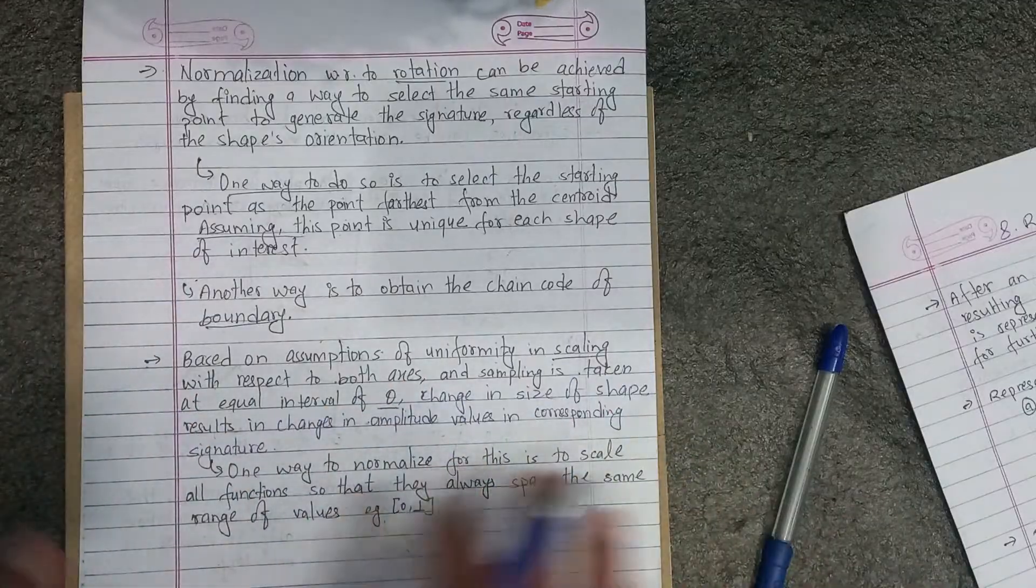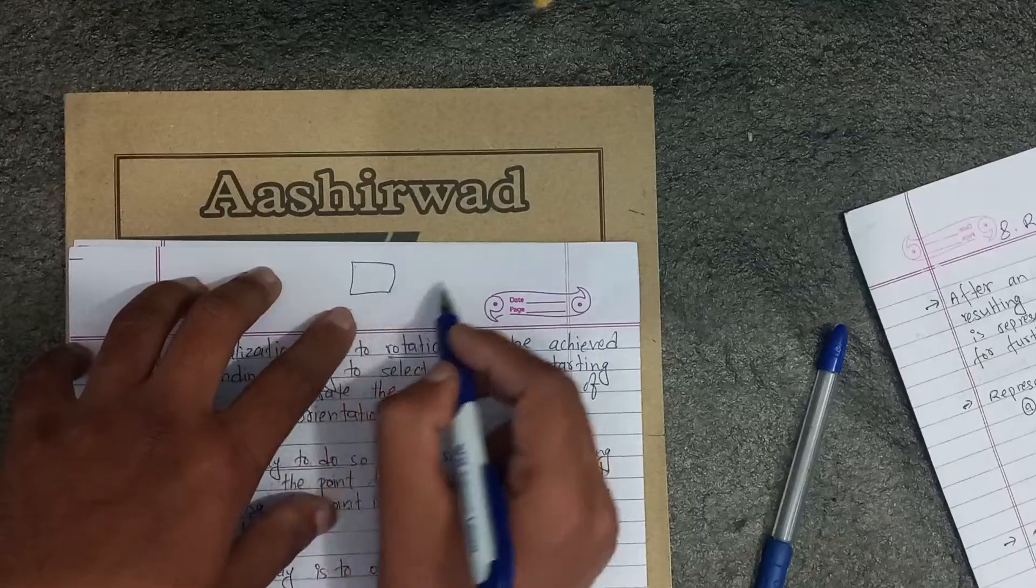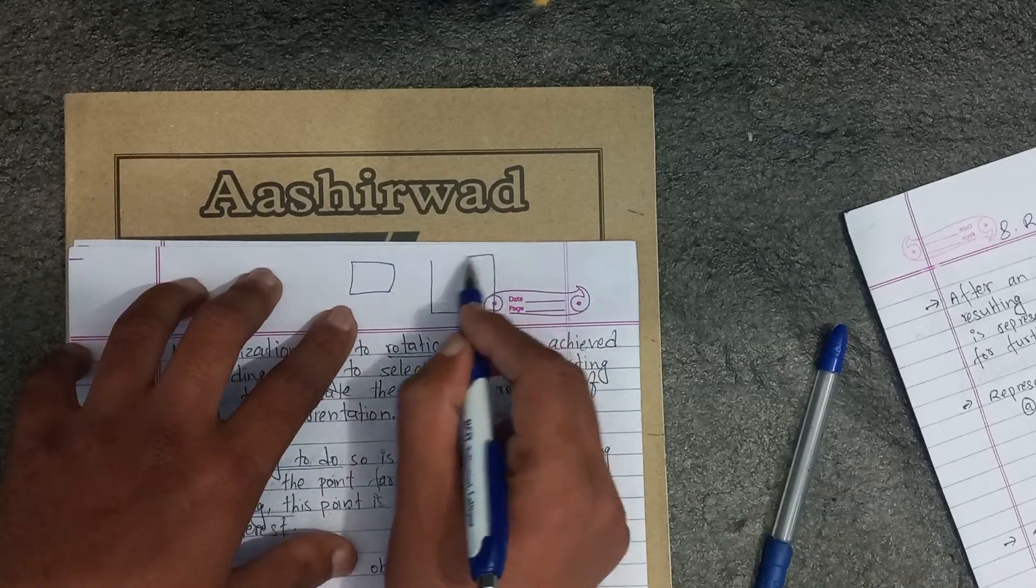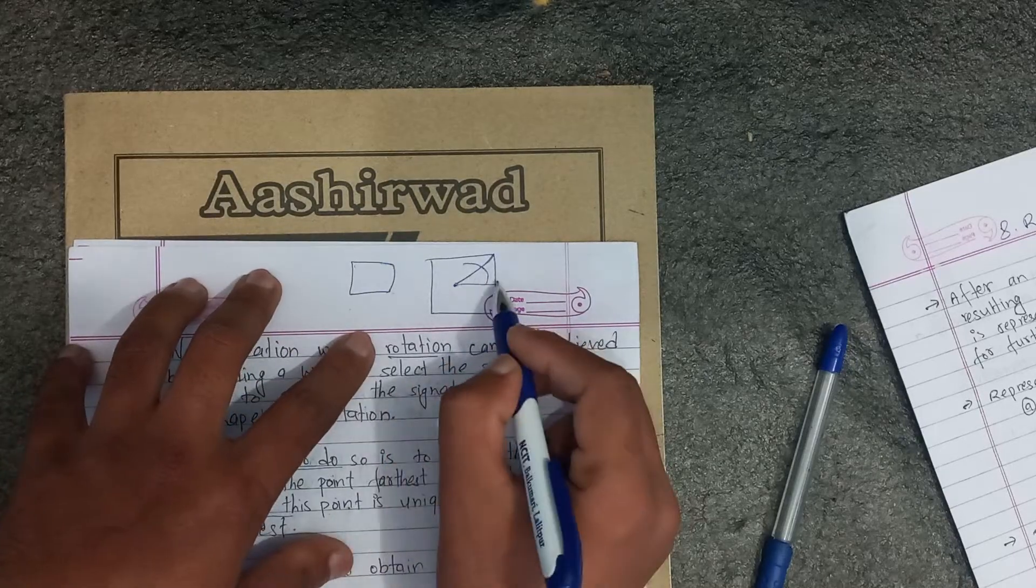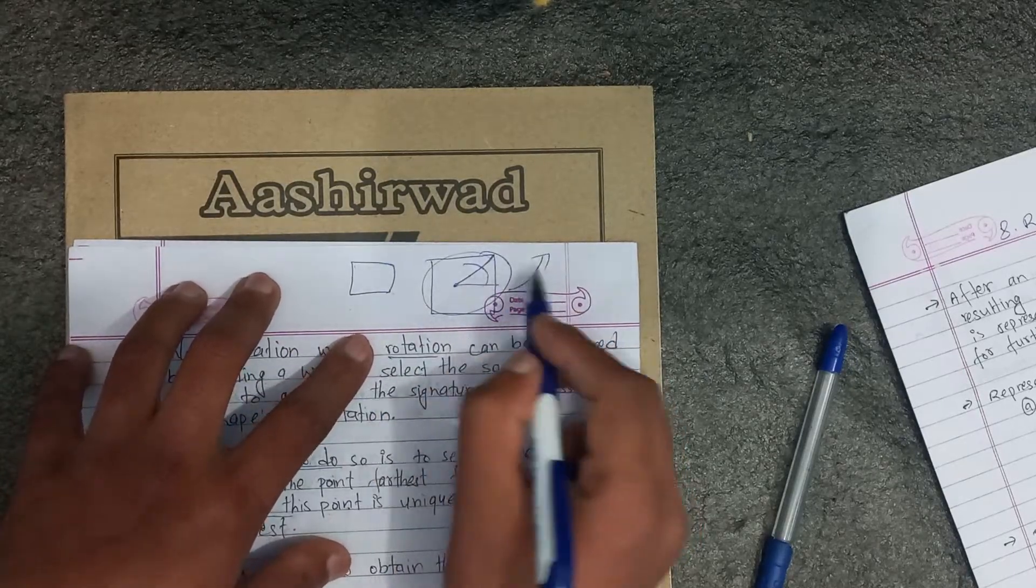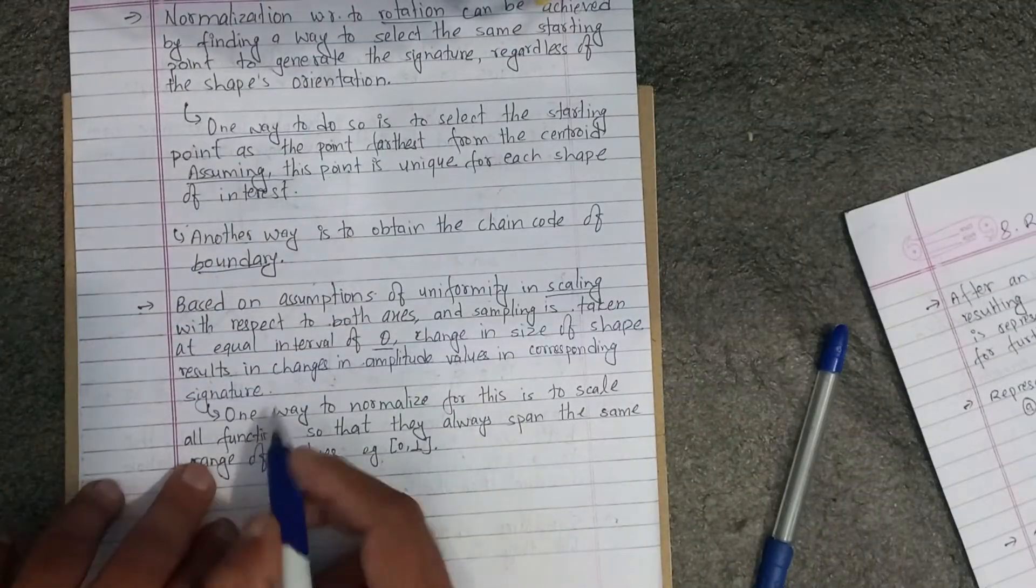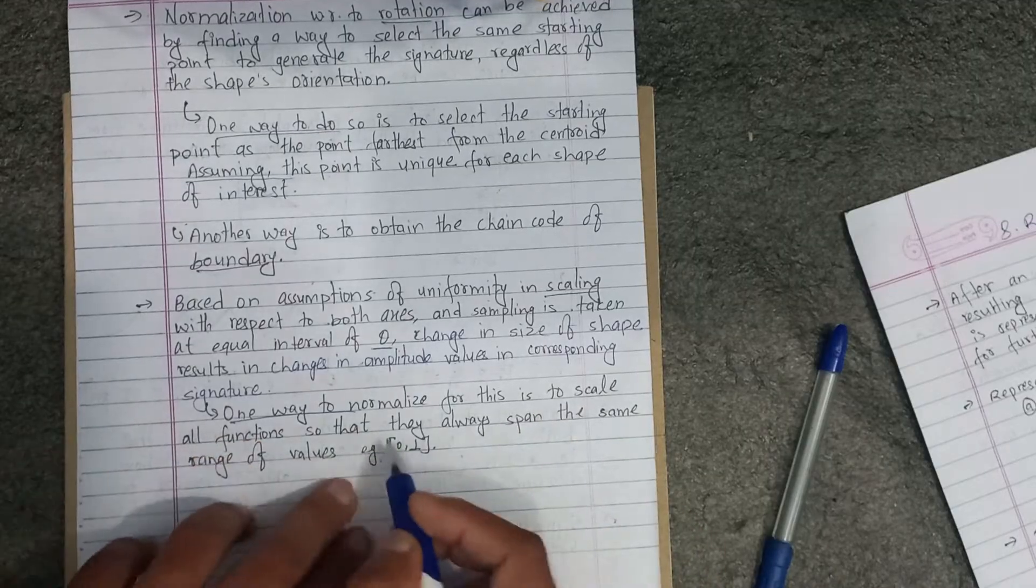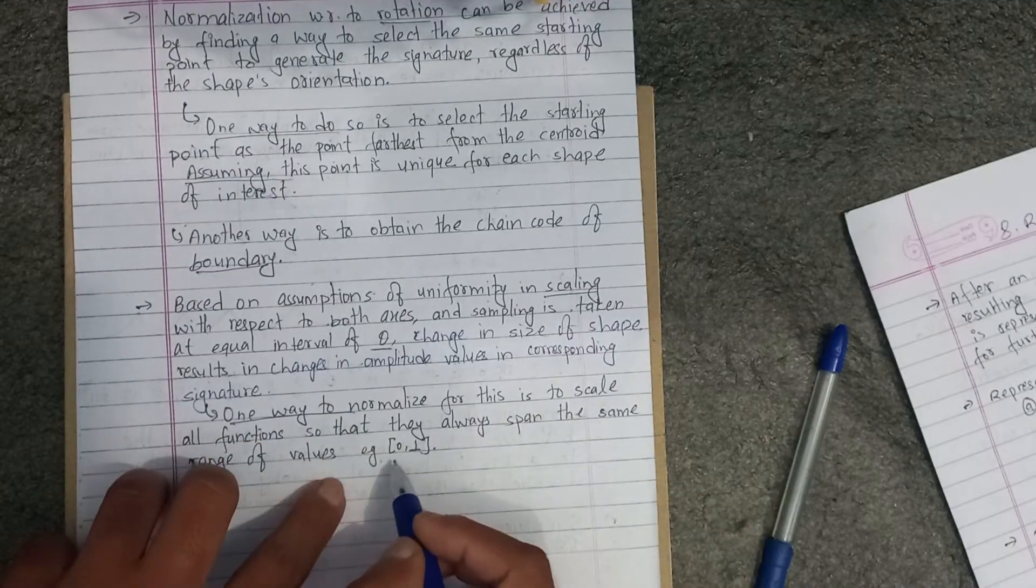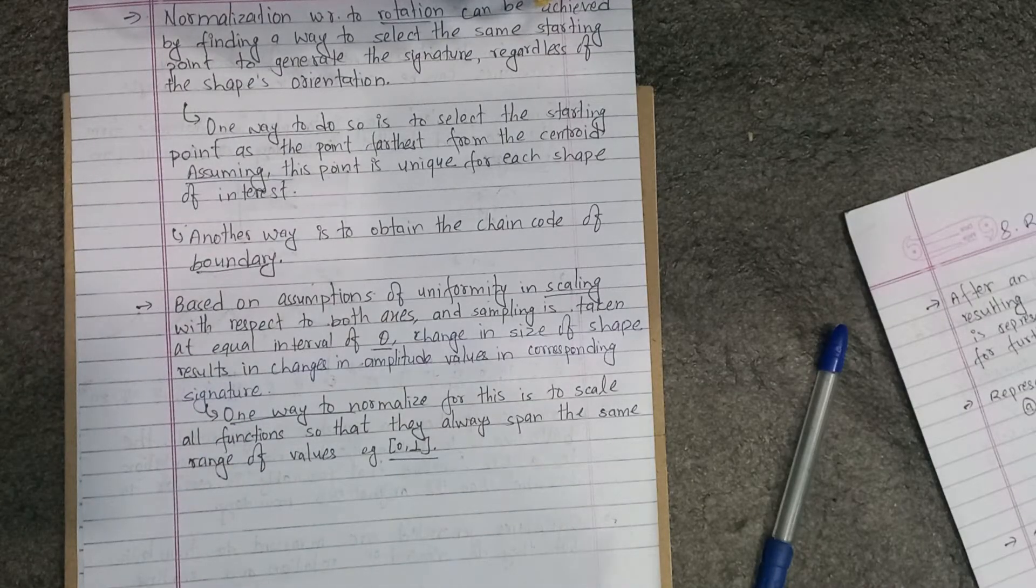For example, in a rectangle, the length and breadth change affects the amplitude. The solution is to scale all functions so that they always span the same range of values, zero to one.